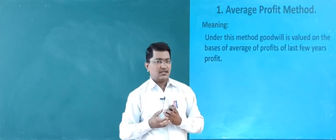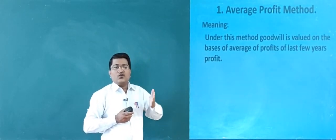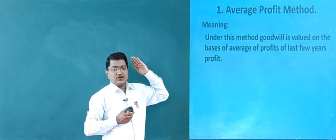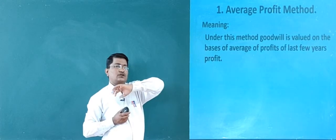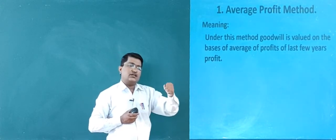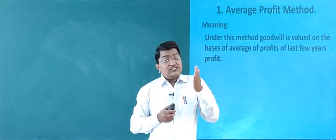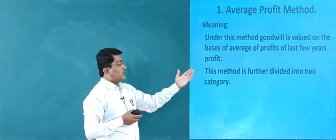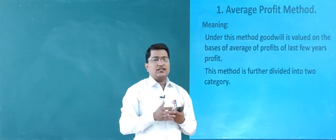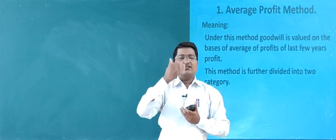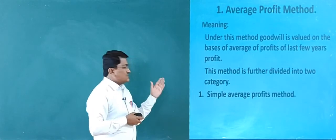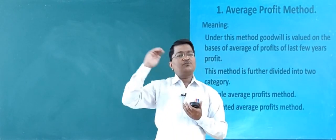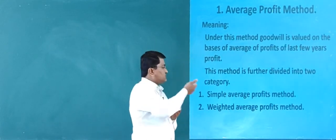Under this method, goodwill is valued on the basis of average profit of last few years' profit. This method is further divided into mainly two parts: first one is simple average profit method, and second one is weighted average profit method.